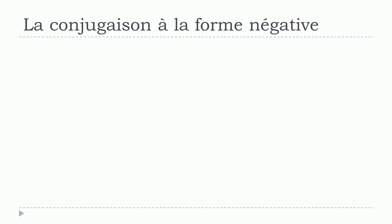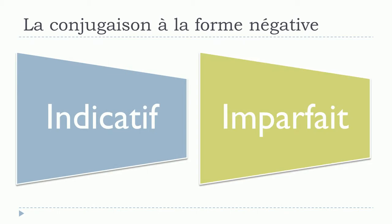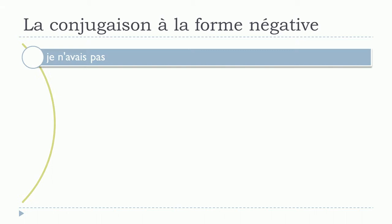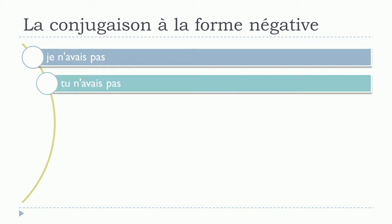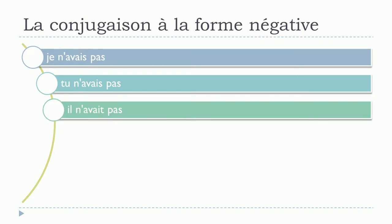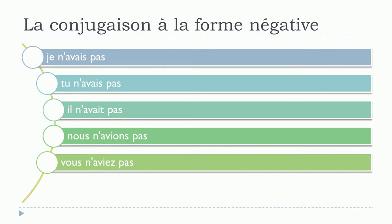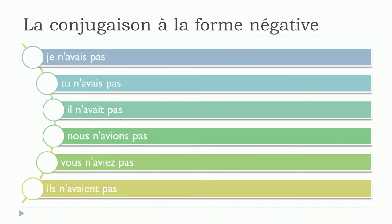And then after that, indicatif imparfait. Je n'avais pas. Tu n'avais pas. Il n'avait pas. Nous n'avions pas. Vous n'aviez pas. Ils n'avaient pas.